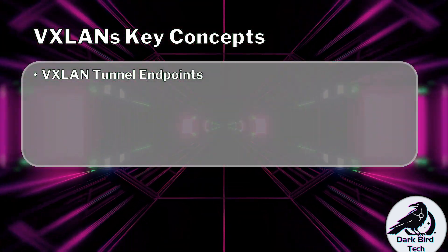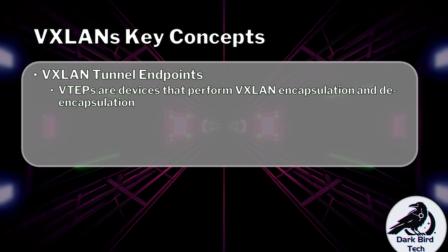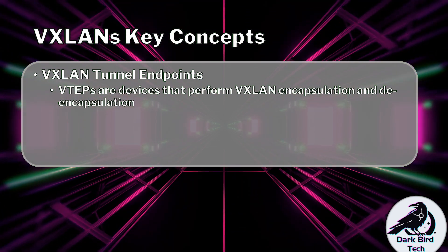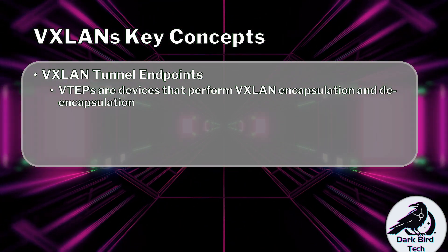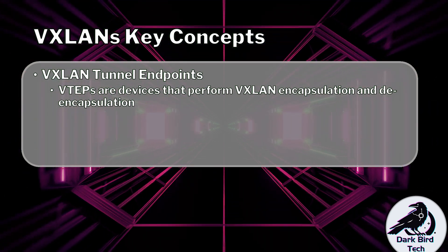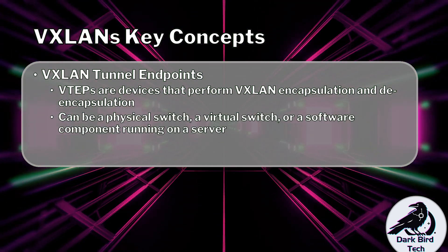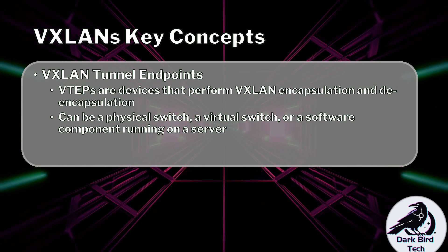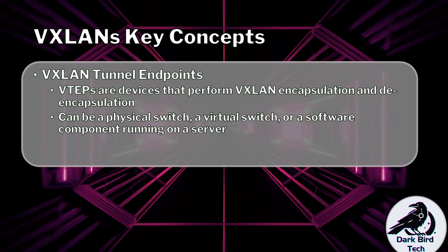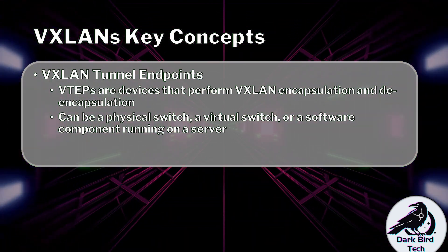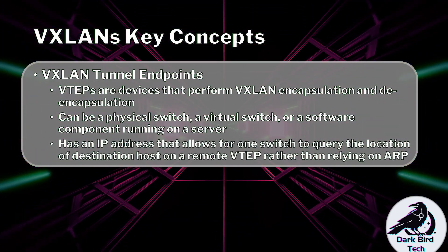Now, for this to all work, we have something called a tunnel endpoint, or VTEP — VXLAN tunnel endpoint being the full term. VTEPs are devices that perform VXLAN encapsulation and de-encapsulation. These are usually the switches that are going to be closest to the endpoints, running the VTEP for the ingress and egress of access to the VXLAN tunneling. And it can be a physical switch, a virtual switch, or a software service running on a server. It is obviously going to be closer to the endpoint than it is to the core of the switched network infrastructure.